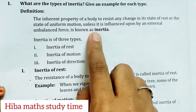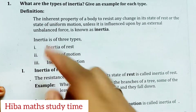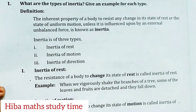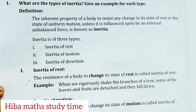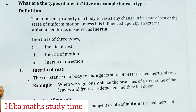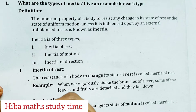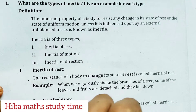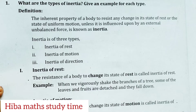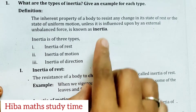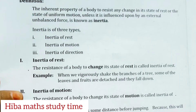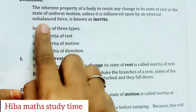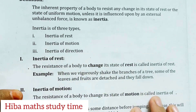So, inertia means a body has one inherent property — it already exists in the body. Whenever there is a sudden change, if it is at rest and a sudden change happens, it will resist that change a little. That property is called inertia. And the disturbance — one external unbalanced force — cannot come in.